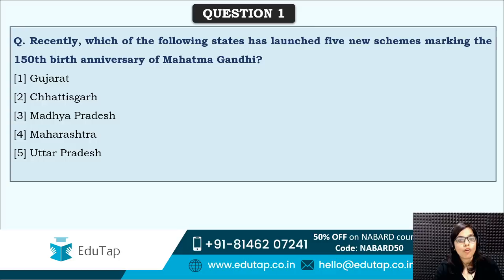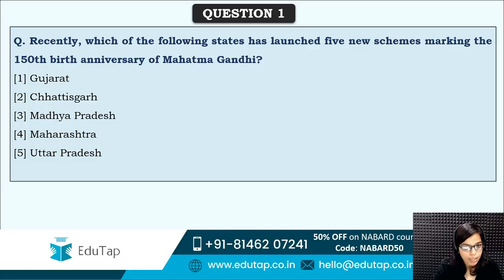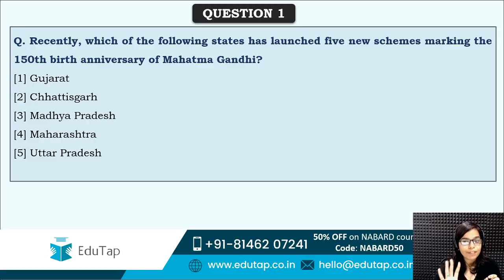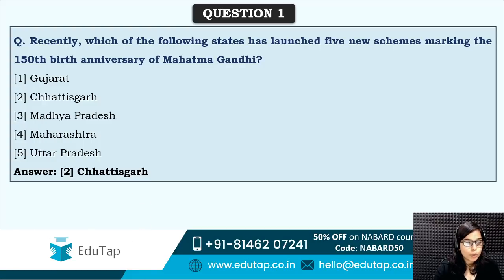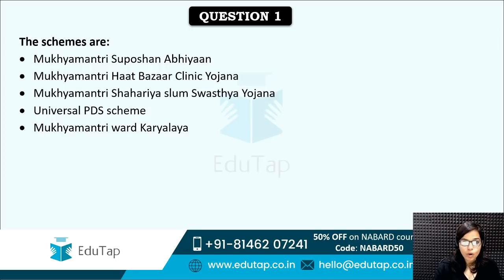The first October question: which of the following states has launched five new schemes marking the 150th birth anniversary of Mahatma Gandhi? This year we celebrated Mahatma Gandhi's 150th birth anniversary — on that day, a state launched five new schemes. The answer is option two — Chhattisgarh launched five new schemes.